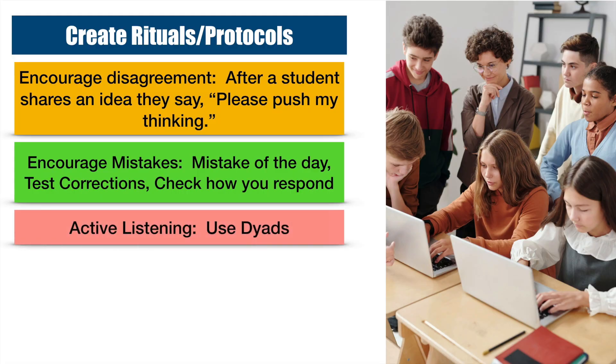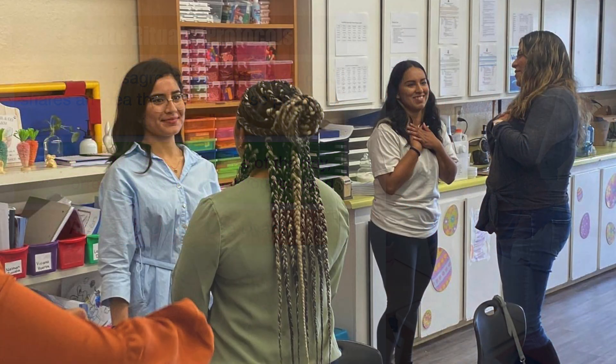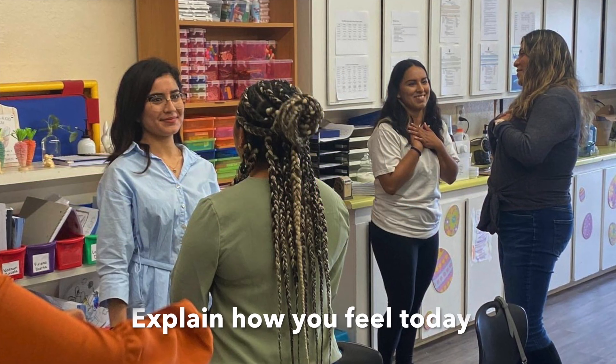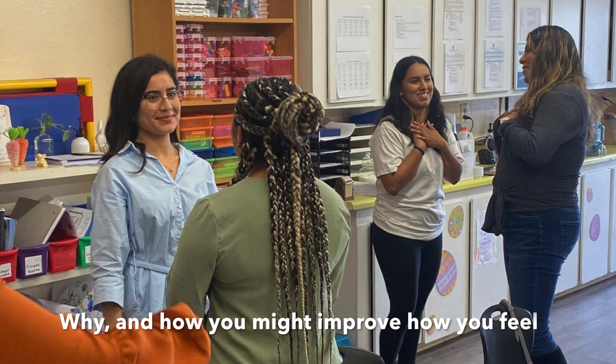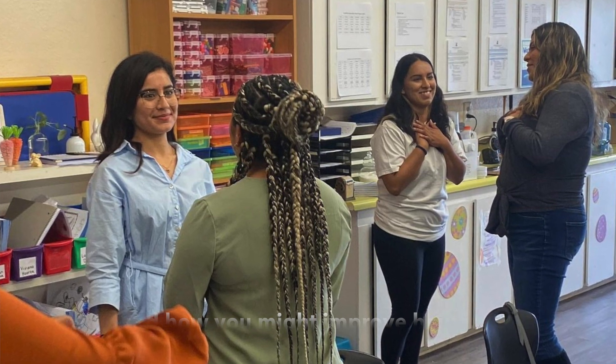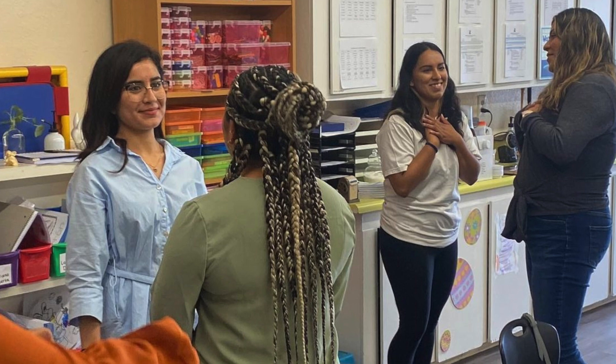To improve active listening, you can use dyads. Simply pose a question that allows students to share how they feel — such as: explain how you feel today, why, and how you might improve how you feel. The listener cannot respond verbally, only with empathic non-verbal language. Then partners switch roles. This forces students to listen to understand, rather than to reply.